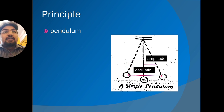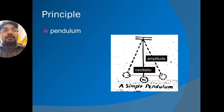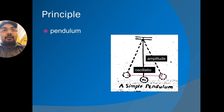A force is required to set the pendulum in motion, and then the oscillation will continue until it is brought to rest suddenly by an opposing force, or progressively by the resistance of the air. The time taken for each oscillation is determined by the length of the pendulum and the acceleration due to gravity.